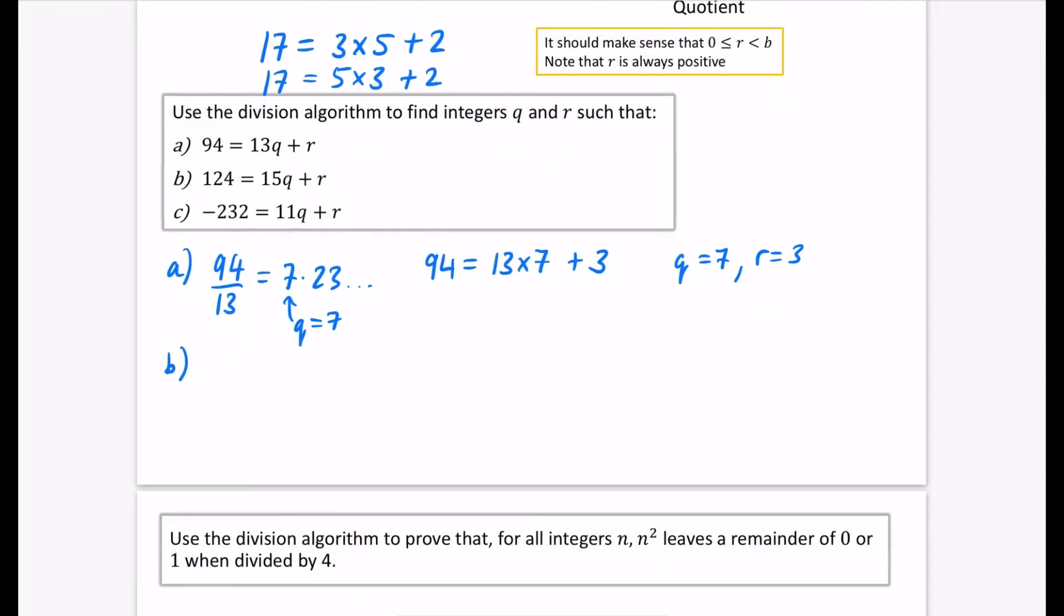Now for part B of the question, we're going to do the same kind of thing. So I'll do my 124, I'll divide it by 15 on my calculator. You don't need to show this part written down at all, and that is 8.26, which means in this case, q is equal to 8. So 124 is going to be equal to 8 lots of 15, and I'll just find out what the remainder is by doing 8 times 15, that's 120. So there's a remainder of 4 in this case. So our q is equal to 8, and our remainder is equal to 4.